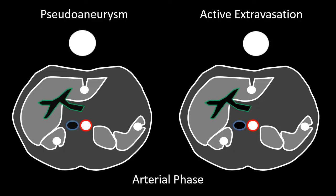Let's look at this in a graphical representation. In the arterial phase, we have two patients who have a very similar injury — a graphical representation of the liver with a laceration in the left hemiliver, a laceration in the kidney, and a laceration in the spleen. Identifying pseudoaneurysm versus active extravasation will be very similar regardless of which solid organ you are looking at. In the arterial phase, pseudoaneurysm versus active extravasation can be difficult to differentiate because they will both show dense contrast opacification similar to the aorta.